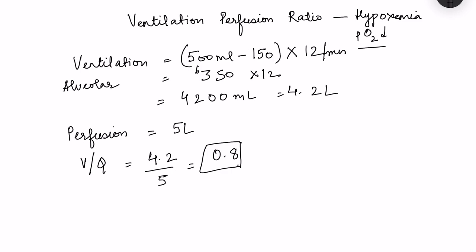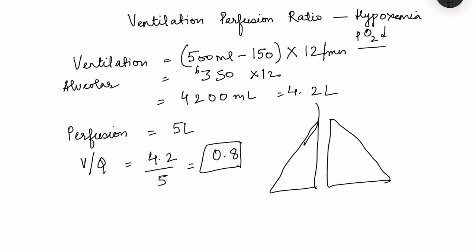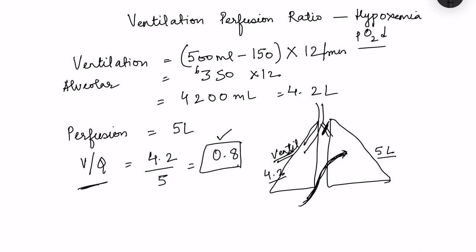Imagine a hypothetical condition: suppose the whole ventilation is going to one lung — say there is a block in a bronchus — and all the perfusion is going to the other lung. Ventilation is 4.2 liters in one lung and perfusion is 5 liters in the other. If we calculate the overall VQ ratio it is still 0.8, but is that useful?